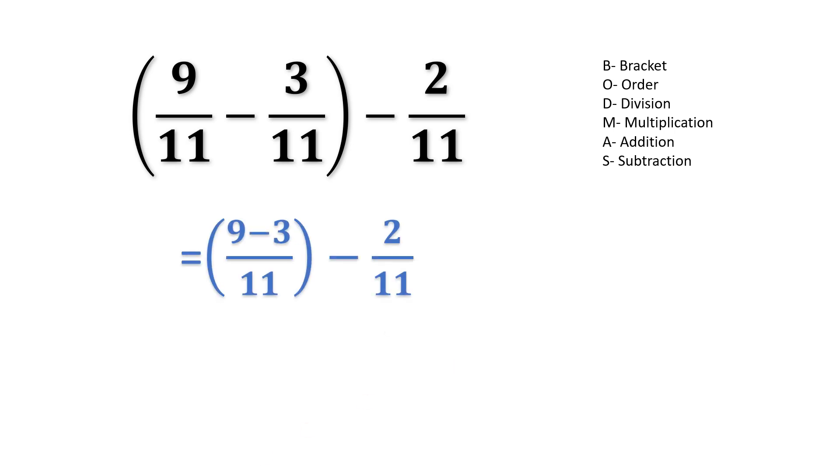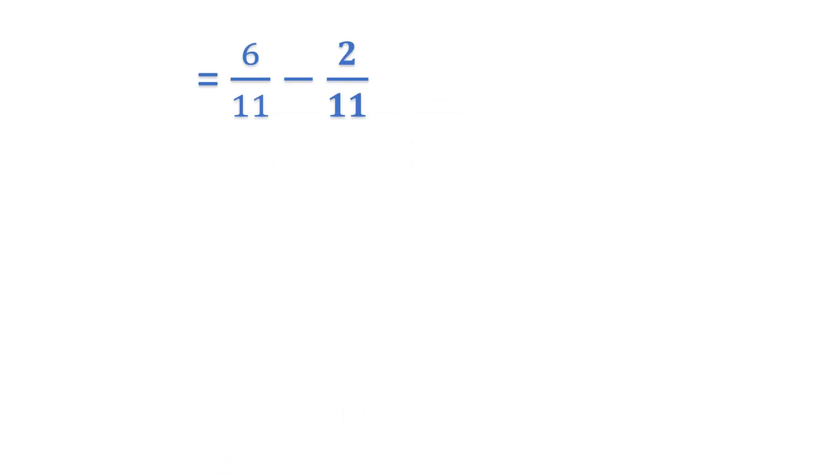In the next step we can see we are subtracting 9 minus 3, it becomes 6 over 11 minus 2 over 11. So again the denominators are same and they are 11.